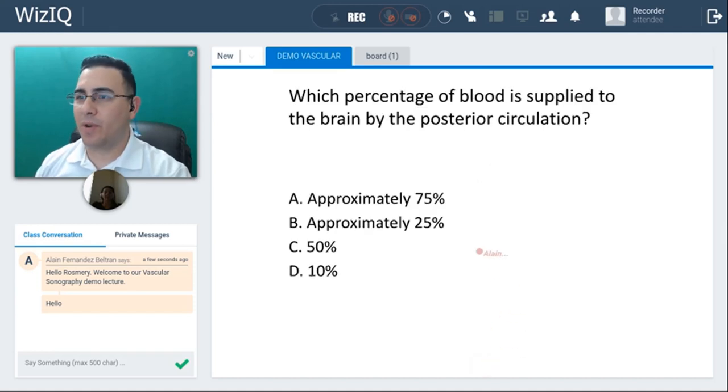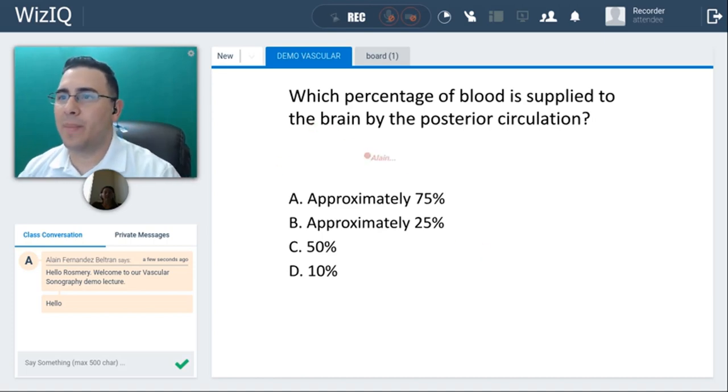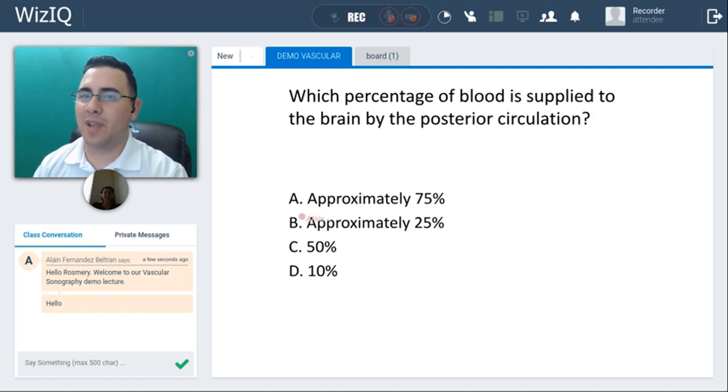Now I have a couple of questions for you to see if you understood what I talked about. Which percentage of blood is supplied to the brain by the posterior circulation? 25, yeah because if the anterior is giving you 75 so the posterior one is going to give you 25. Perfect Rosemary you got it awesome.